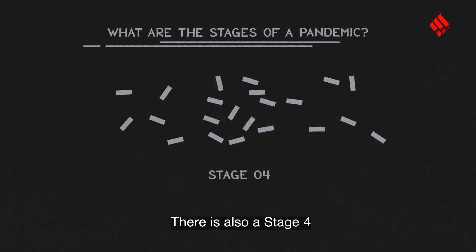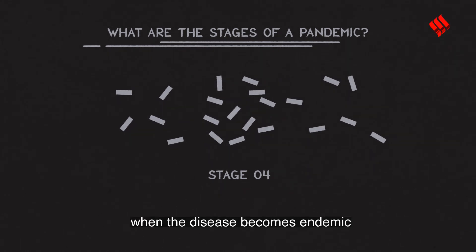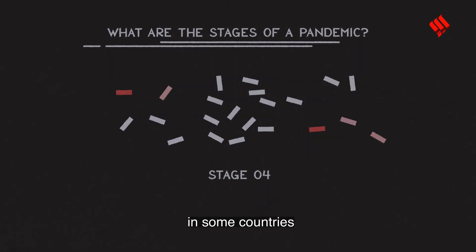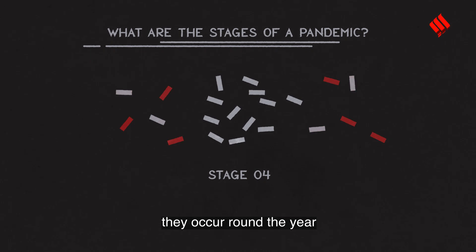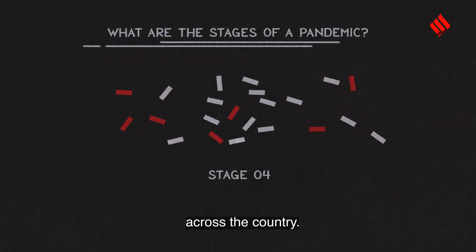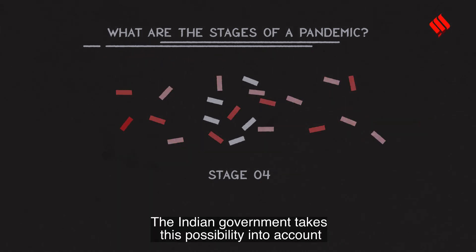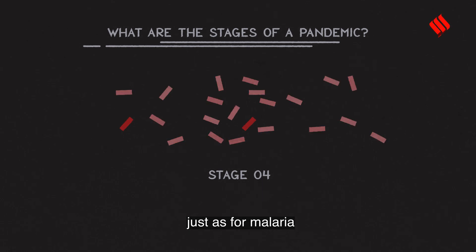There is also a stage 4, when the disease becomes endemic in some countries, meaning it occurs around the year across the country. The Indian government takes this possibility into account, just as it does for malaria and dengue.